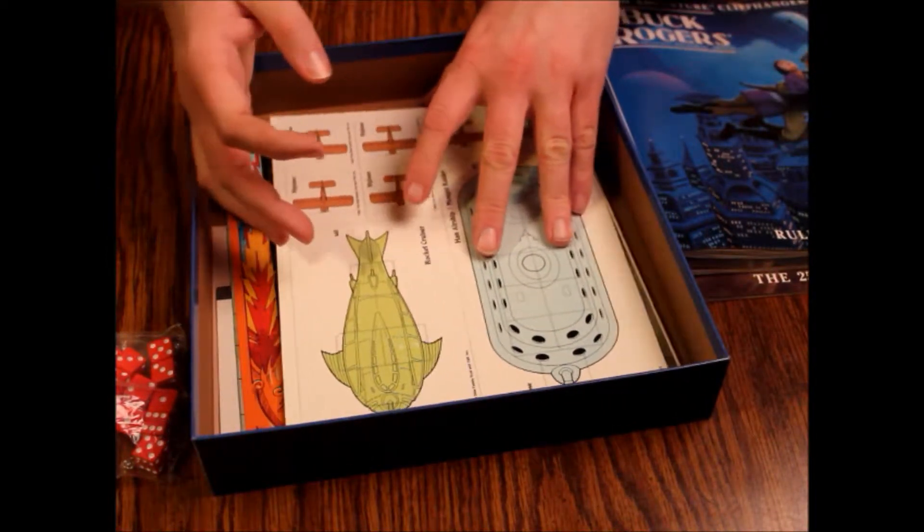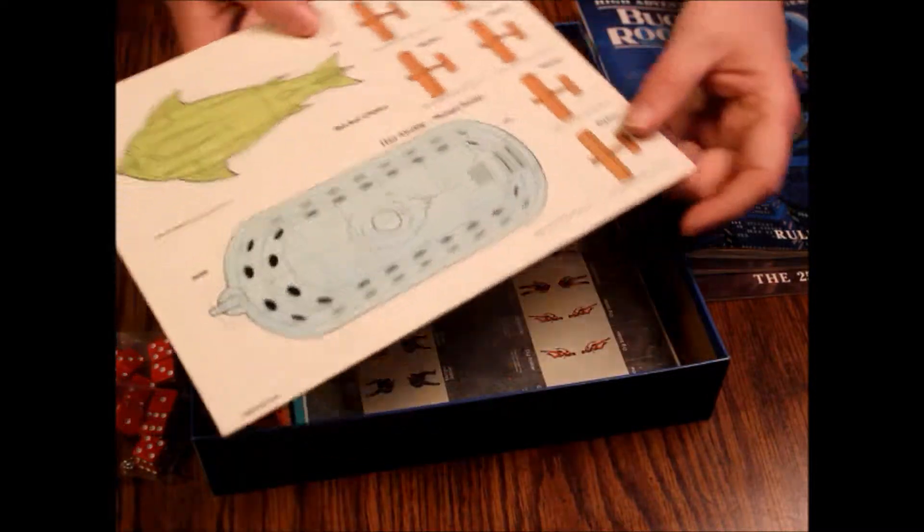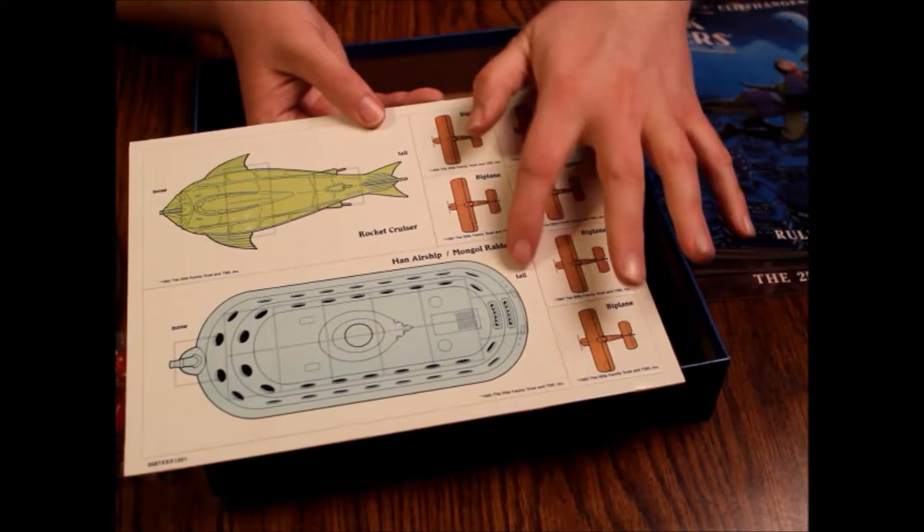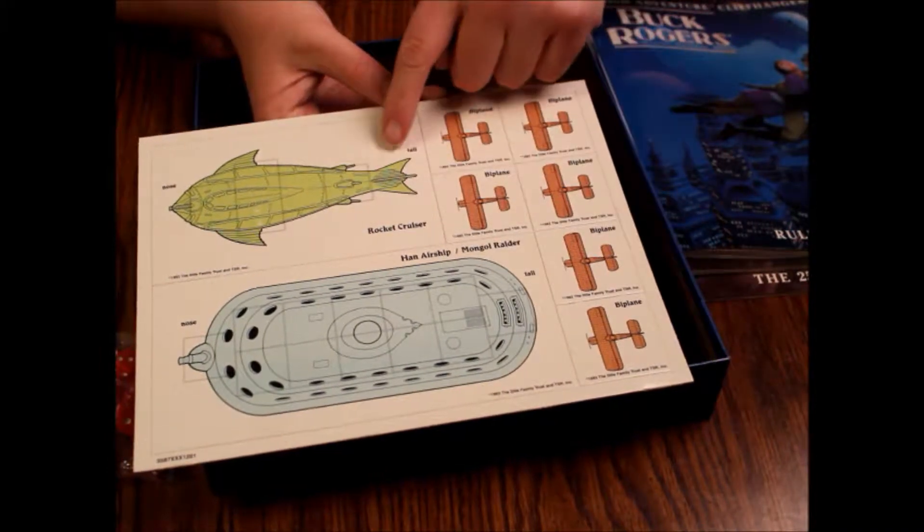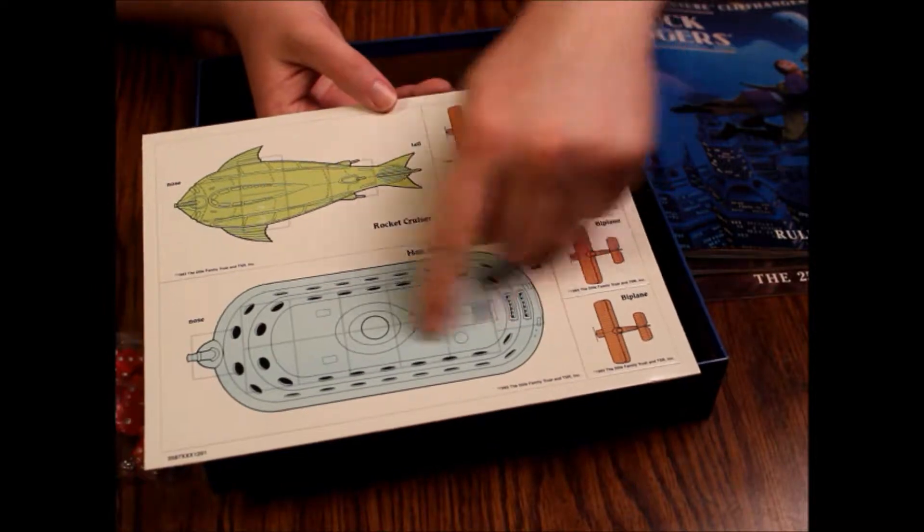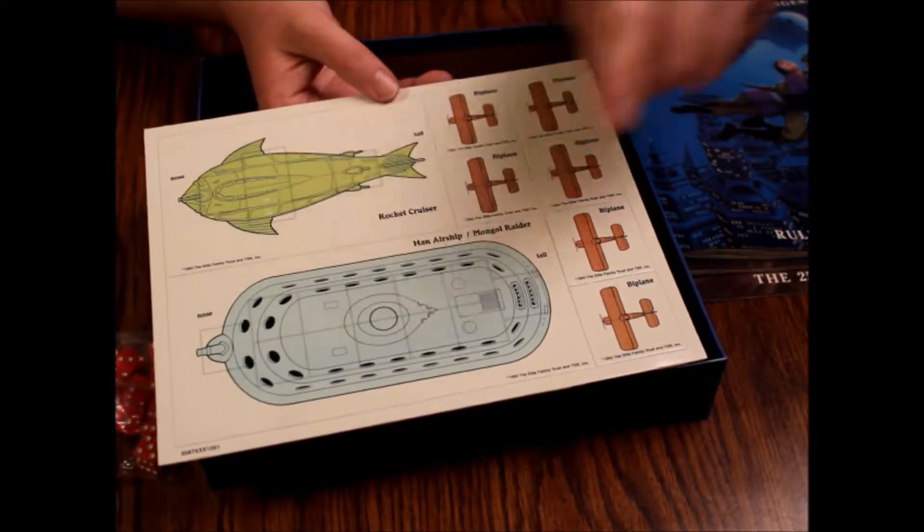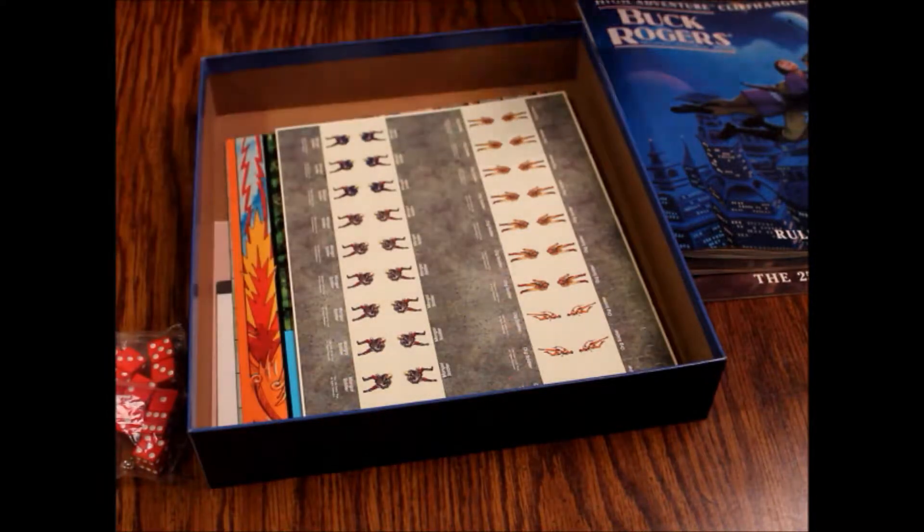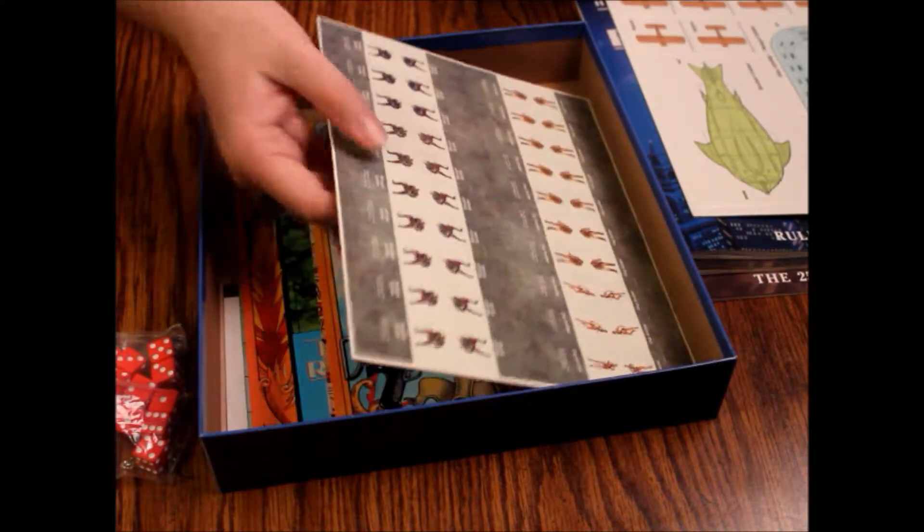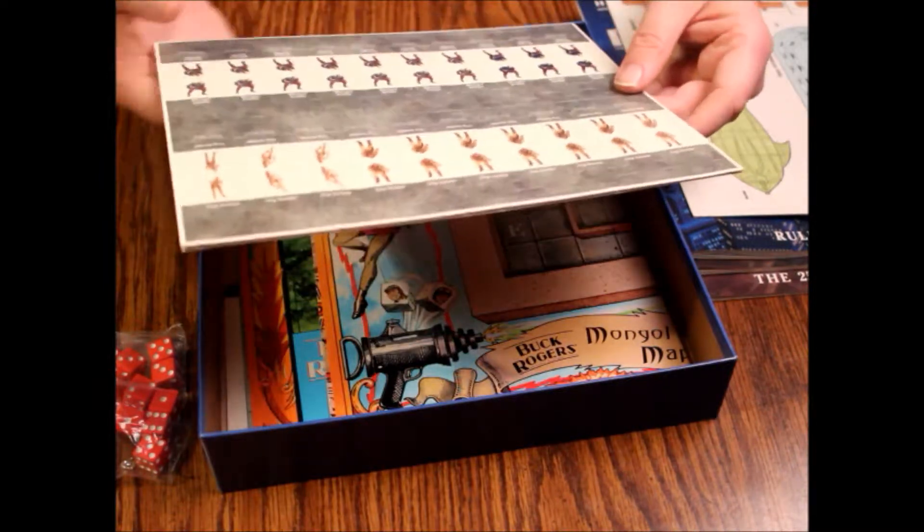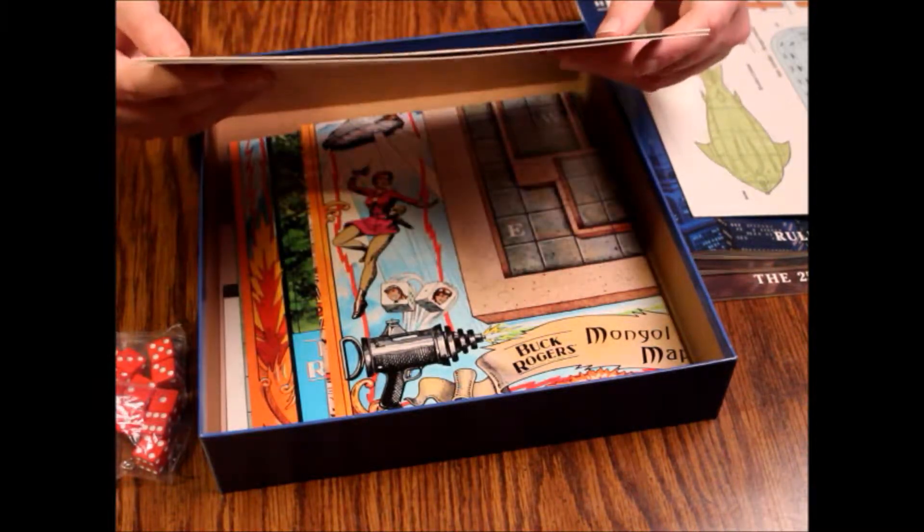Here's the punch-outs. These are probably the parts that are gonna be missing. We've got six biplanes, a Han airship, and a rocket cruiser. These are sectioned off so you could put different things on them. On the back is nothing.